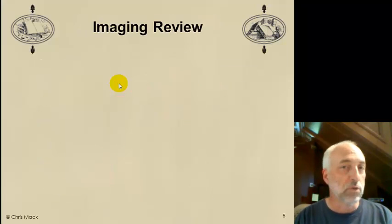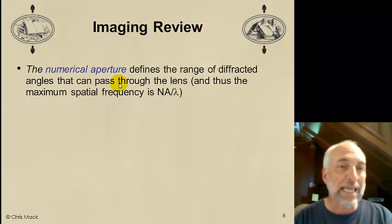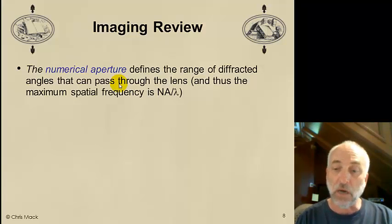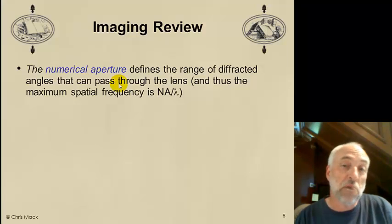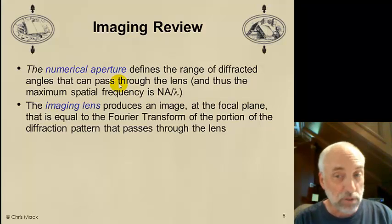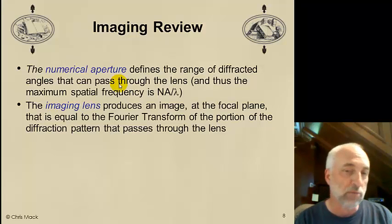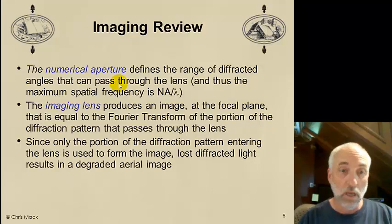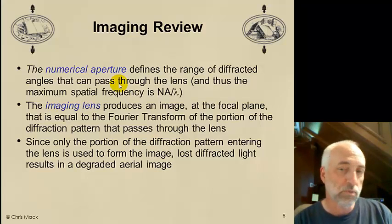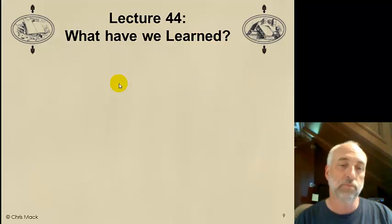In the meantime, let's review what we've learned about imaging so far. The numerical aperture defines the range of diffracted angles that can pass through the lens. In terms of spatial frequencies, that means there's a maximum spatial frequency, a cutoff. All spatial frequencies above NA over lambda are lost. The imaging lens produces an image at the focal plane that is equal to the Fourier transform of that portion of the diffraction pattern which is actually captured by the lens. But because only a portion of the diffraction pattern is captured, the lost diffracted light results in an image that is degraded. So the more diffraction orders we capture, the better the quality of the image.